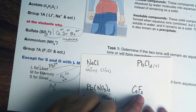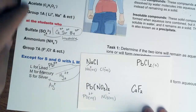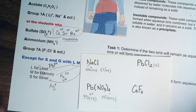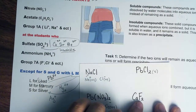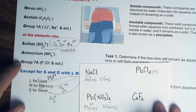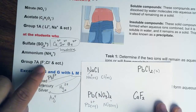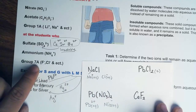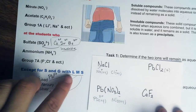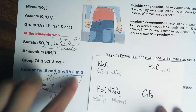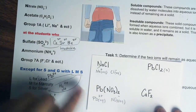Then we have calcium fluoride. Calcium has no specific rule, but we have fluorine (F), which is in Group 7A. Group 7A will always be soluble except with LMS. Calcium is not part of LMS.